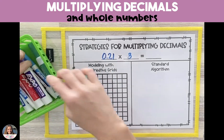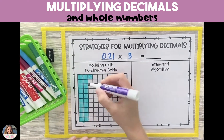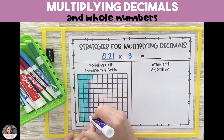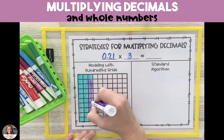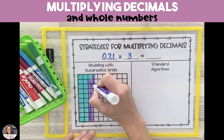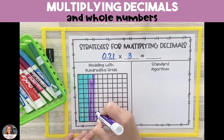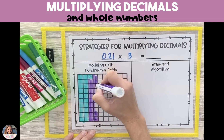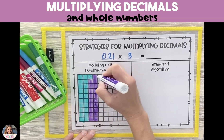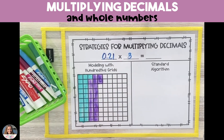Every single square is worth 1 hundredth of the model. To show 21 hundredths, we're going to fill in two full columns and then one square to show 21 hundredths.